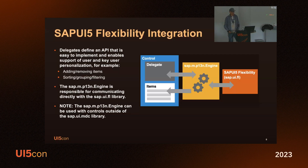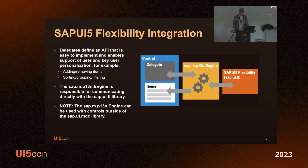If you use a standard table, you would have to build something like this yourself. What this slide also shows is that to use the flexibility, we abstracted it into an engine in the MLibrary. You can then combine the MLibrary with a different persistence layer if you want. As of UI5 2.0, it should be possible to have a persistence layer different from the flexibility layer — potentially even one provided by us.